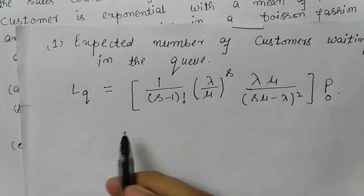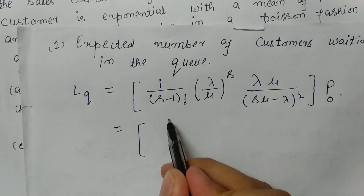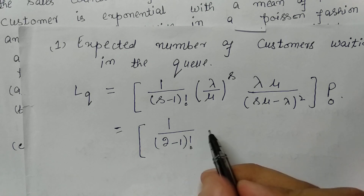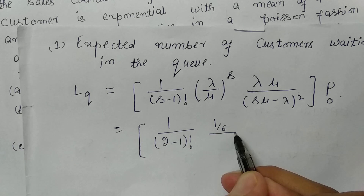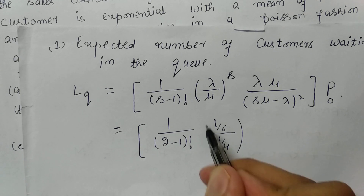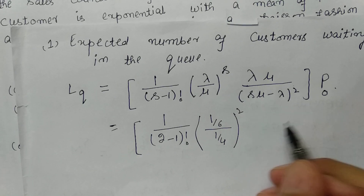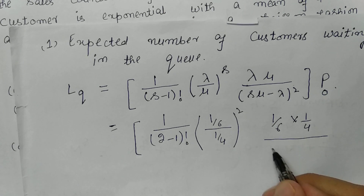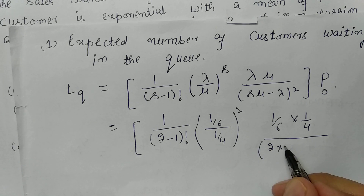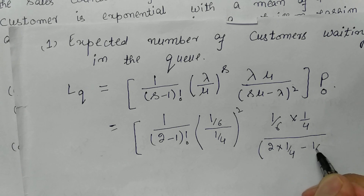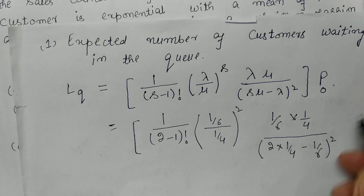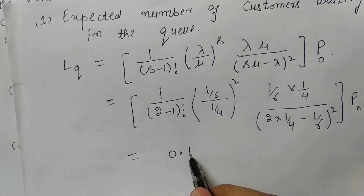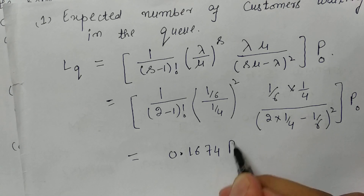Substituting values: s equals 2, so (2−1)! equals 1. λ/μ equals (1/6)/(1/4), raised to power 2. Then λ equals 1/6, μ equals 1/4, sμ equals 2×(1/4) equals 1/2, and sμ − λ equals 1/2 − 1/6. After simplifying, I get Lq equals 0.1674 × P0.